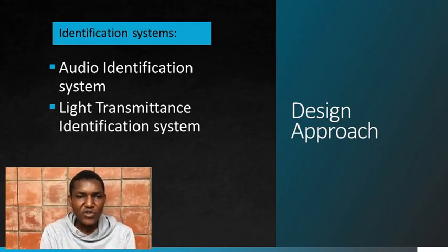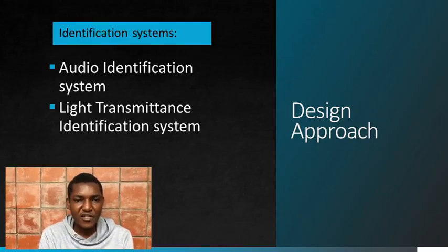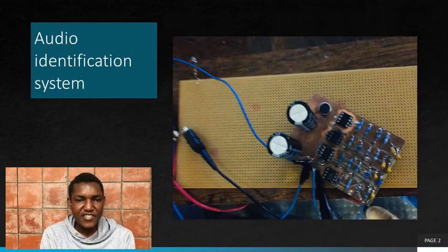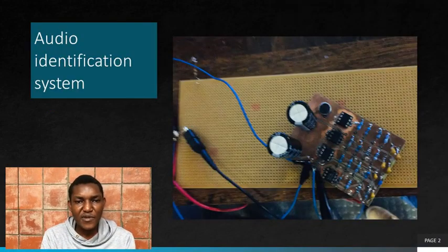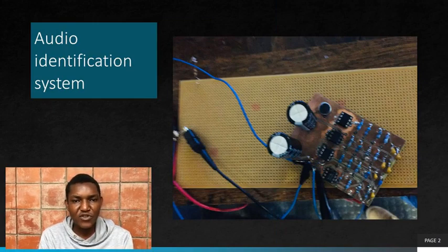We will now detail the method that we use to design the two identification systems. Starting with the audio identification system, we started by conducting an experiment to determine the power spectrum of the audio signals.